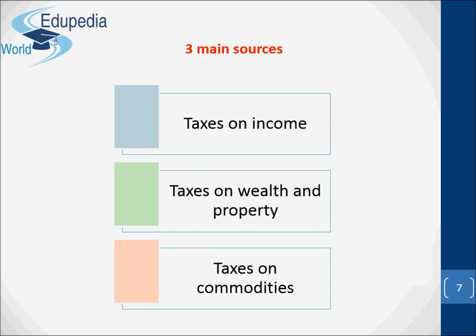The revenue from taxes comes from three main sources: taxes on income, taxes on wealth and property, and taxes on commodities.